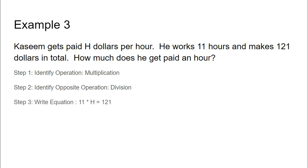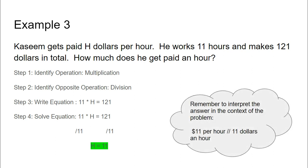We're going to write the equation. We have 11 times H equals 121. So this means 11 hours, and he's working the H dollars per hour, and that's equal to 121. Now we're going to solve the equation. We have 11 times H is equal to 121. We know that we're dividing, and we get H is equal to 11. We have to make sure that we translate that in the context of the problem. So H is equal to 11 means 11 dollars per hour.